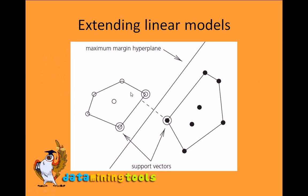Looking at this example, we have our maximum marginal hyperplane and our instance set. These three instances — what we call support vectors — are the closest to the maximum marginal hyperplane. We only need to consider these three instances and the rest can be ignored. This is how we deal with overfitting in support vector machines.